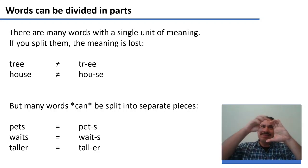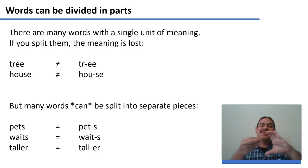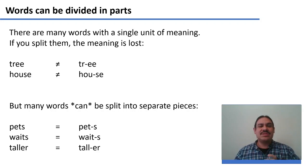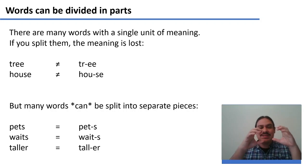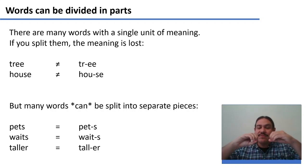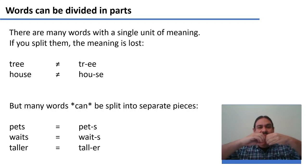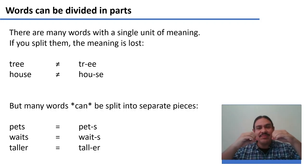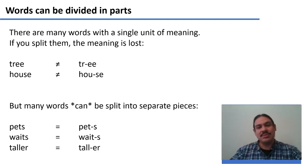Words like 'pets,' 'waits,' and 'taller' can have more than one part in them, and they gain full meaning when joined together. But you can split them, and the parts will still have meanings of their own.